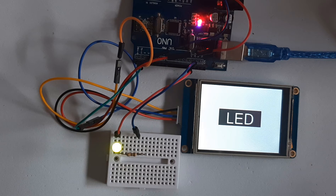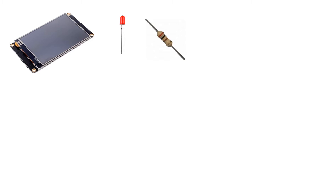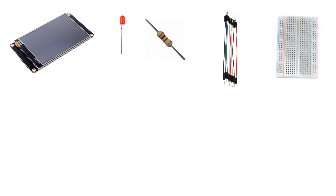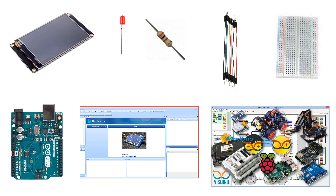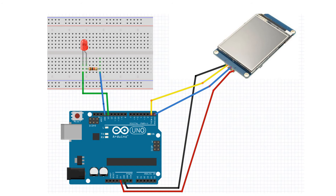For this project you will need a Nextion display, one LED, one kilo ohm resistor, jumper wires, a RedBoard Arduino, Nextion editor software, and Visuino software. Wire everything according to this schematic.